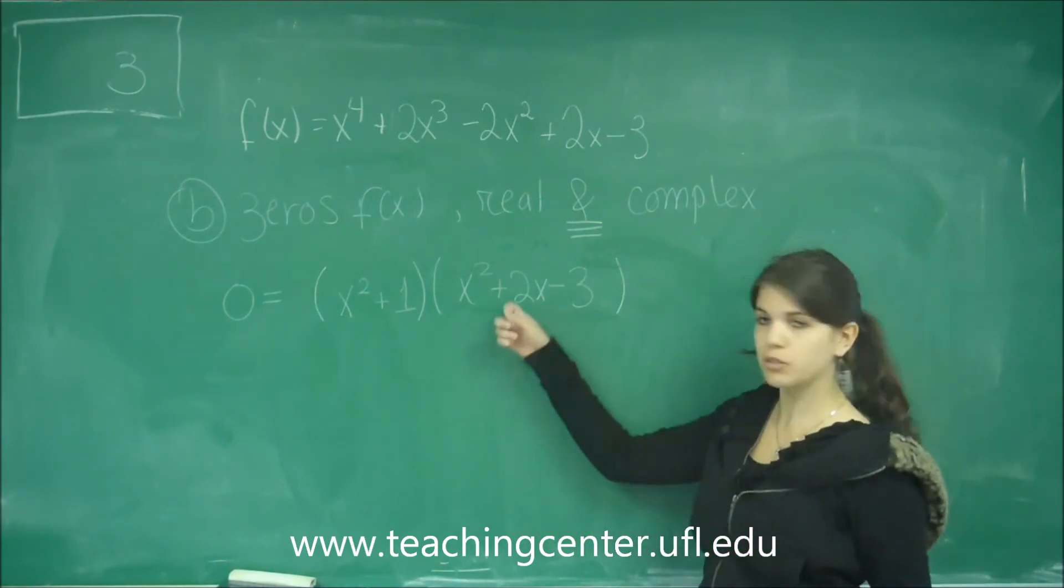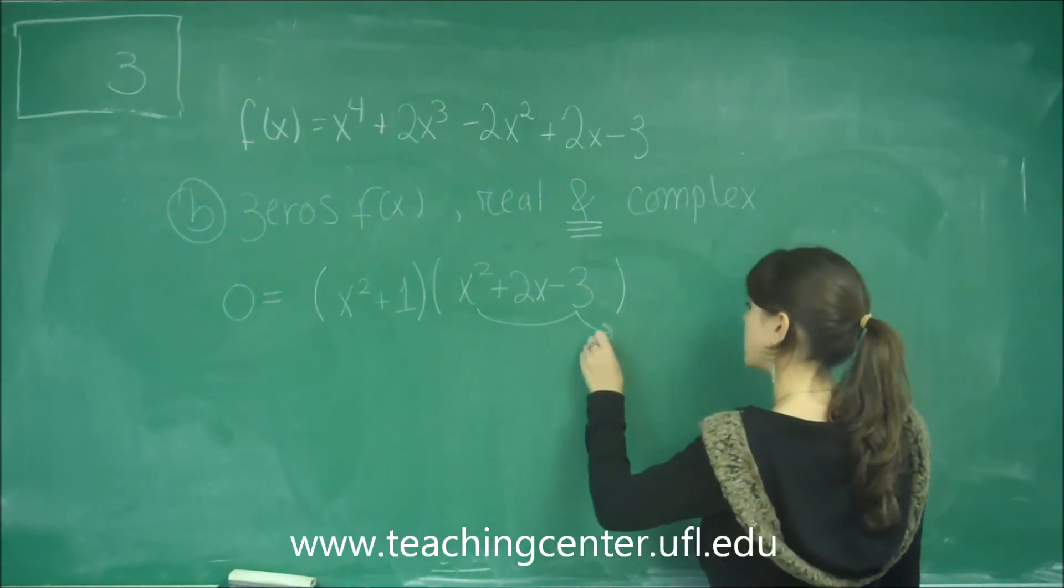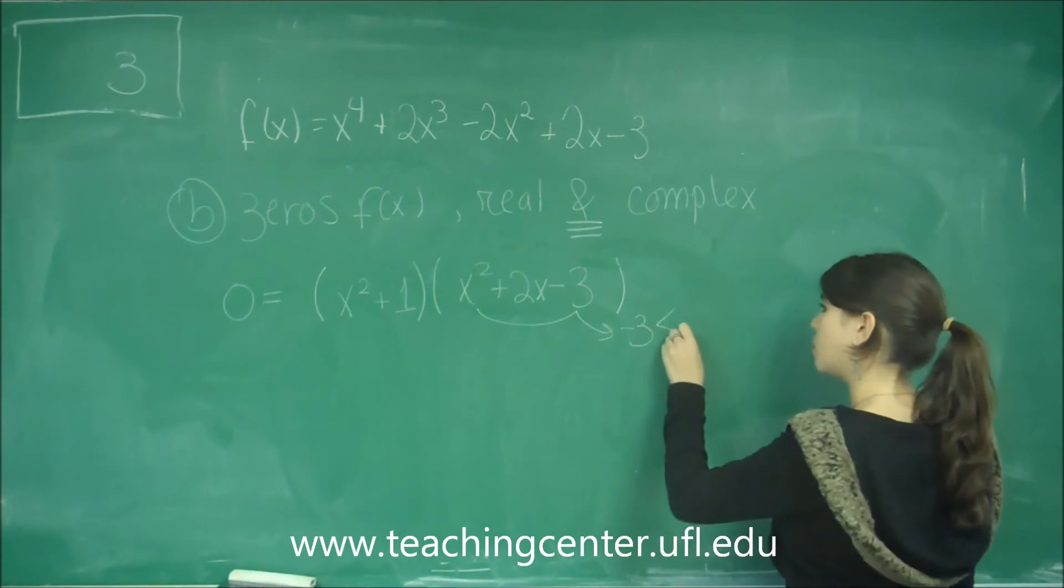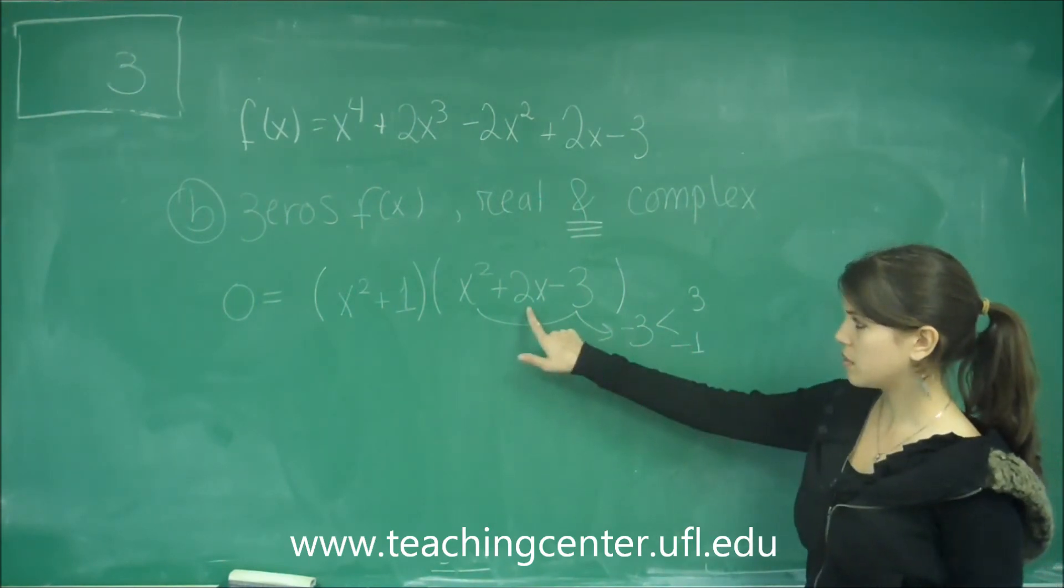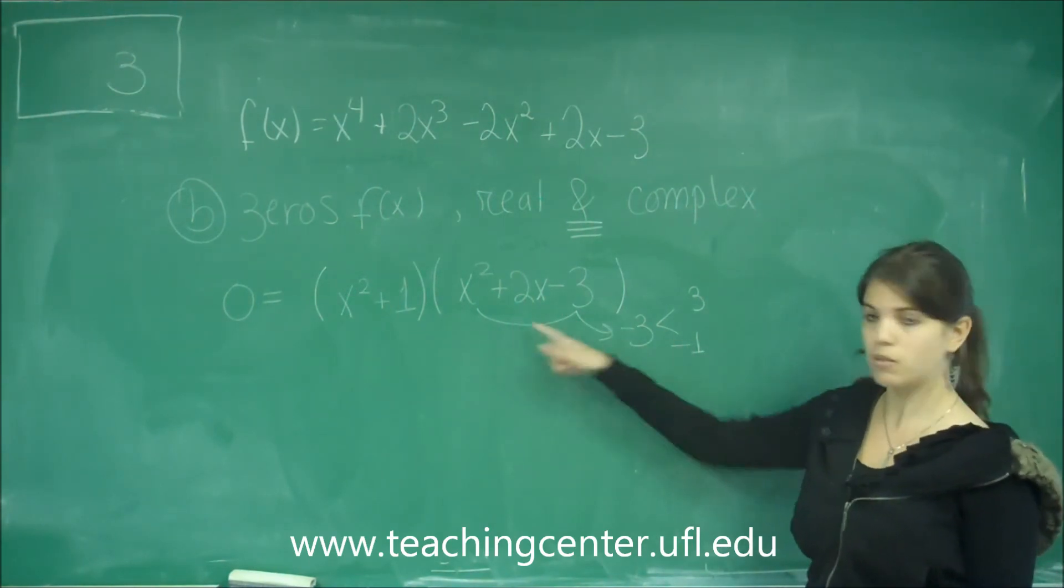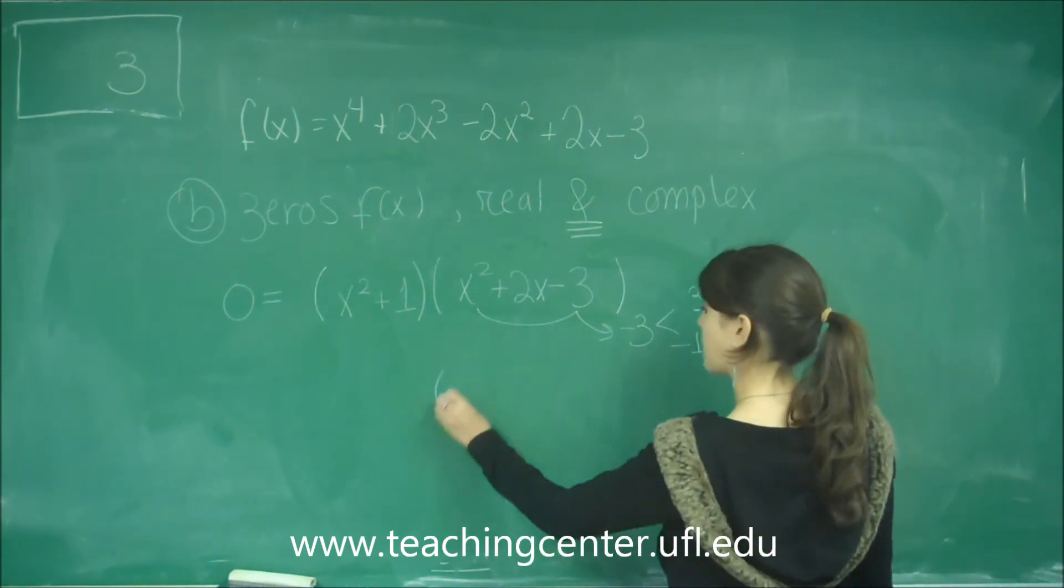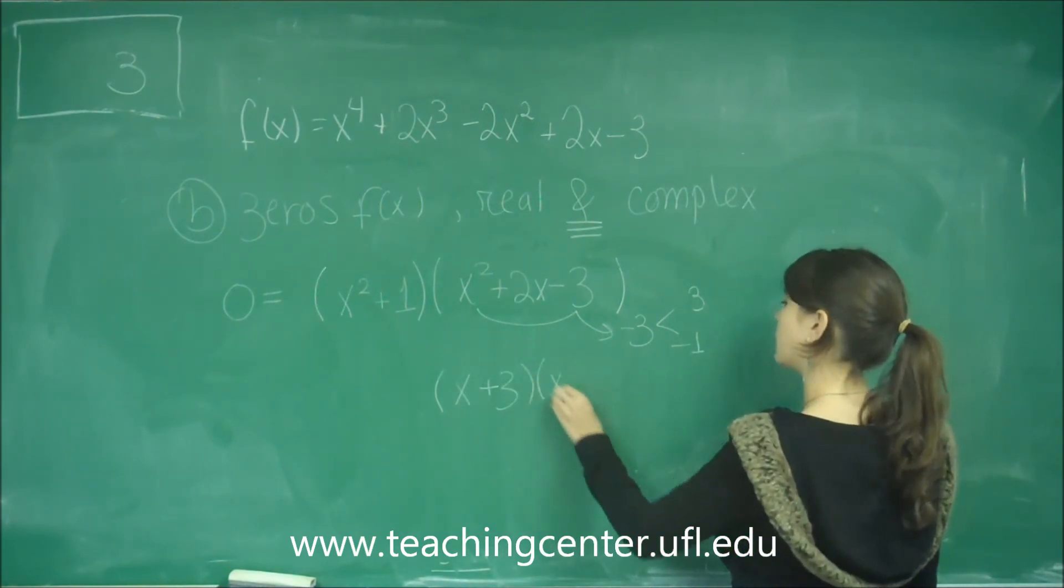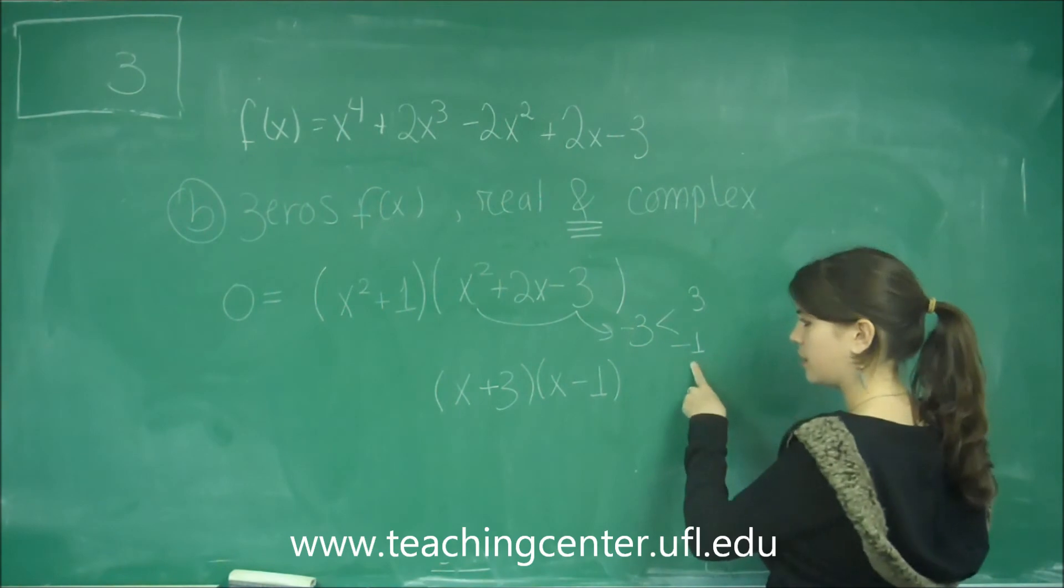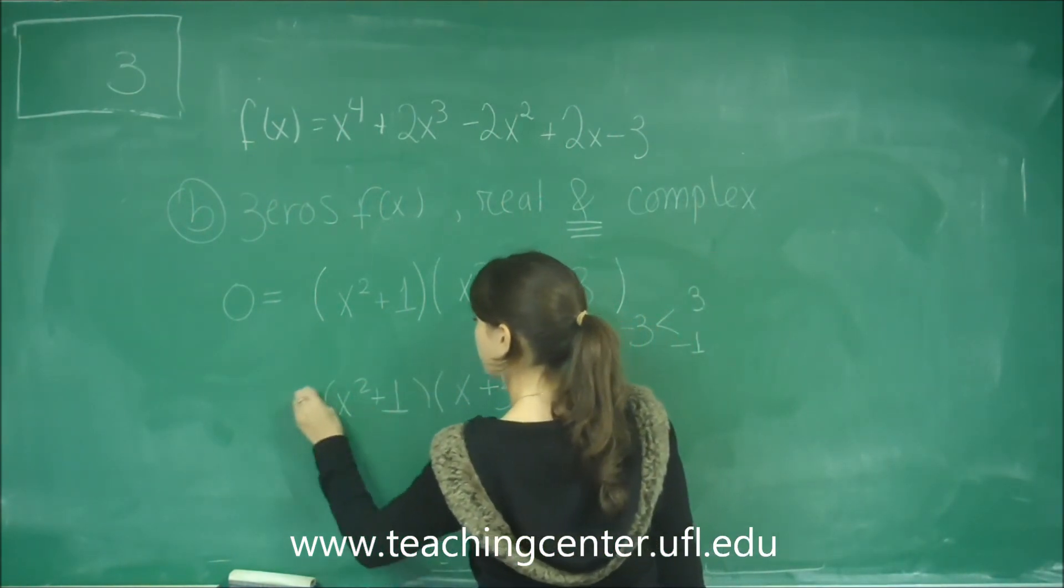And that number was x squared plus 2x minus 3. So now we factored it a little bit. Maybe we could factor it a little more if this is factorable. And if not, we could use a quadratic equation to solve for x's for here. Let's see if it's factorable. This times this gives me a negative 3, which I can separate into 3 and 1. And I can multiply the 1 by negative to form a positive 2. So if I add these 2, I get a positive 2. If I multiply the 2, I get a negative 3. So then I'm going to rewrite this as x plus 3 here and x minus 1 here, and then the x squared plus 1 that I got from before.